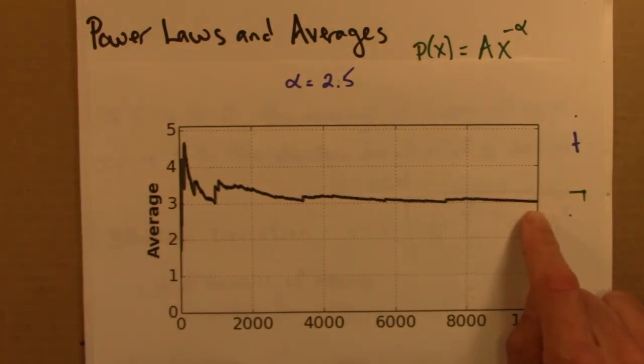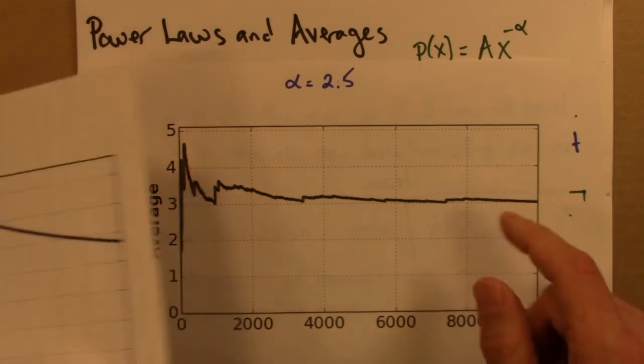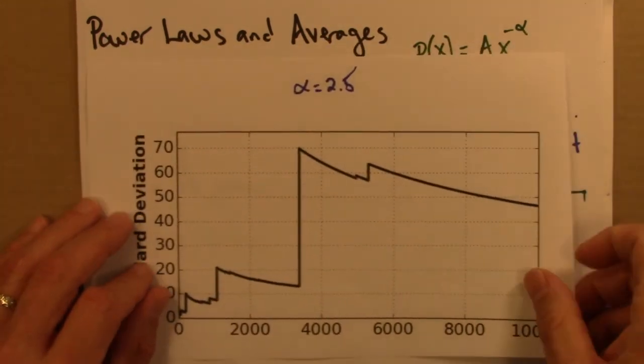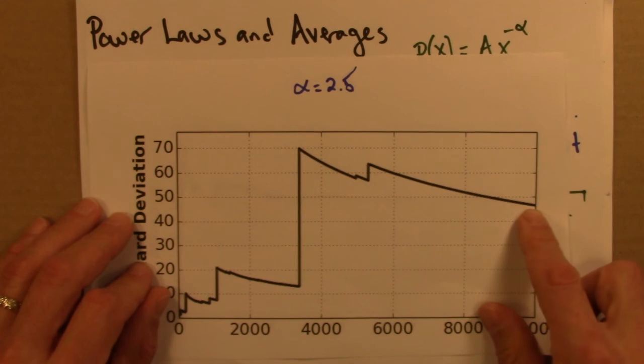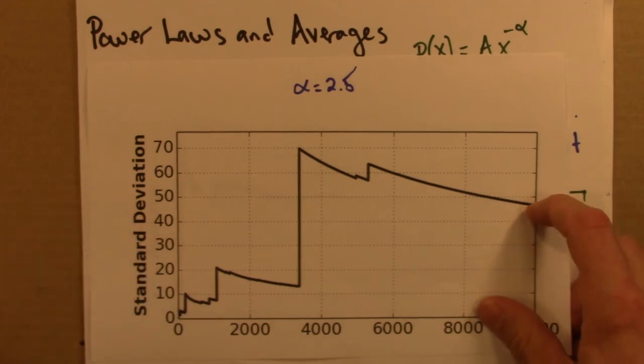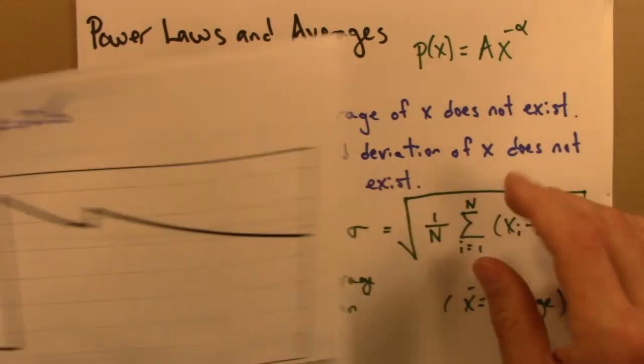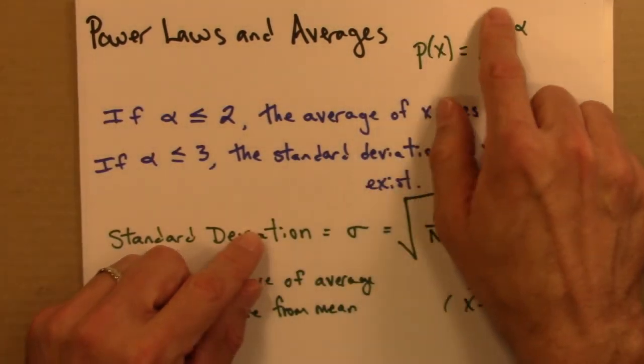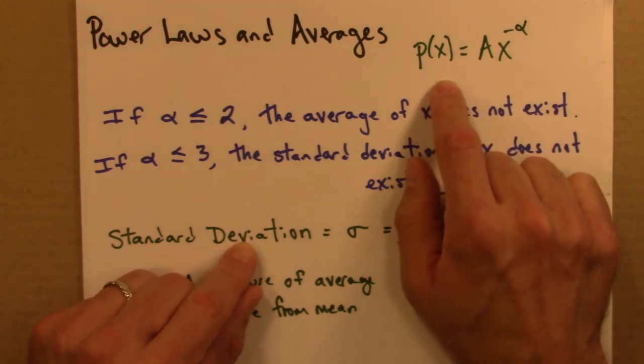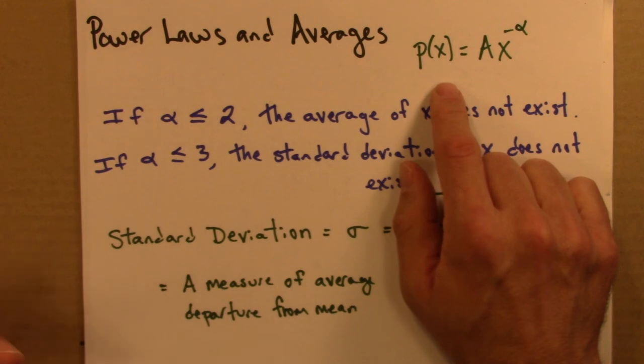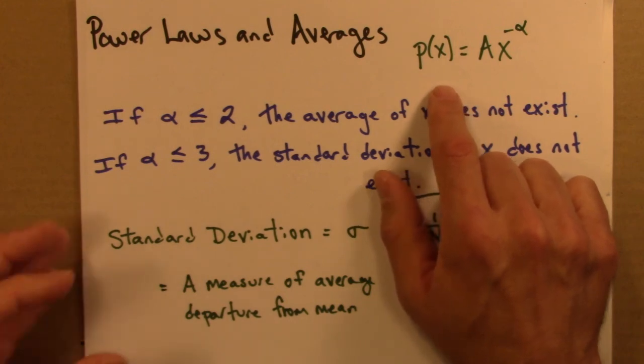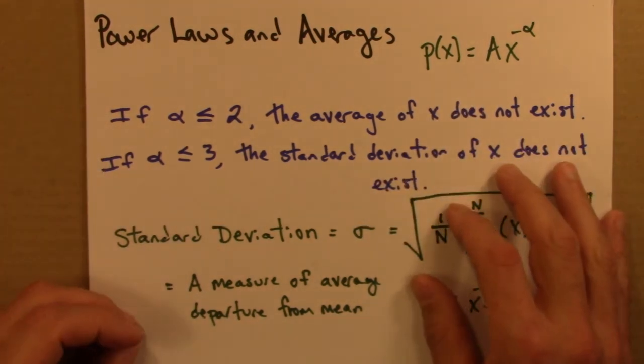Because, yes, there's a mean of 3, but the average fluctuations about 3 are infinite, in the sense that they're not defined. The average doesn't exist. So, all of this is to say that power laws are very different distributions than those that we're used to. We've seen that they're scale-free and self-similar. We've seen that they have long tails. And one of the consequences of these long tails.